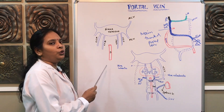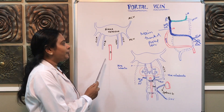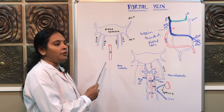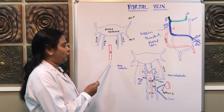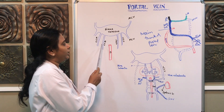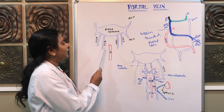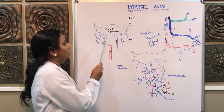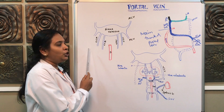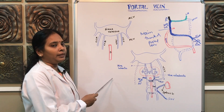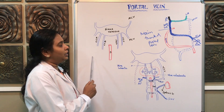The vitelline veins are veins which drain the wall of the yolk sac. In earlier embryonic life, part of the yolk sac enters into the gut tube formation. On the yolk sac wall, there are two veins called the right vitelline vein and the left vitelline vein. Next, another set of veins are called umbilical veins. The umbilical veins connect the placenta to the heart for circulation, to give oxygenated blood to the fetus.